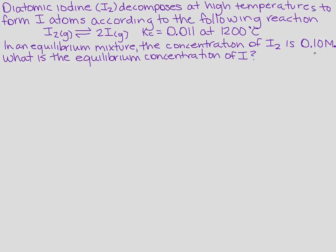Well, let's write down what we know and then we can go from there. So it told us that the concentration of I₂ is 0.10 molar. Then it wants me to find the concentration of I, so that's what I don't know, so it gets a big question mark. And it gives me the Kc value at 1200 degrees of 0.011.